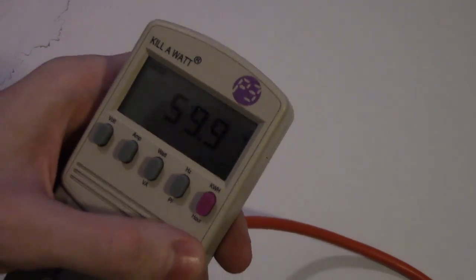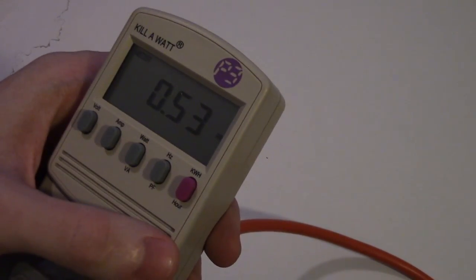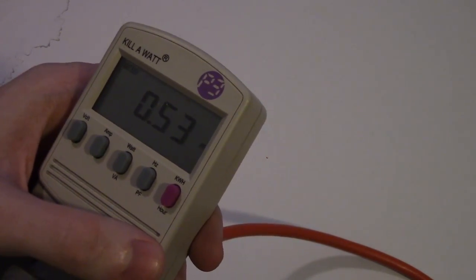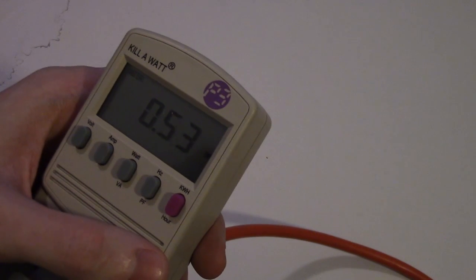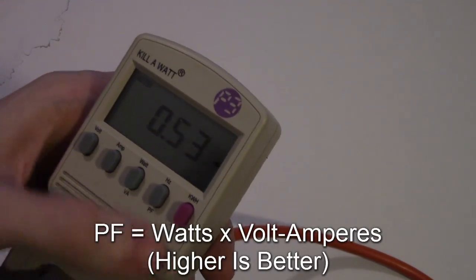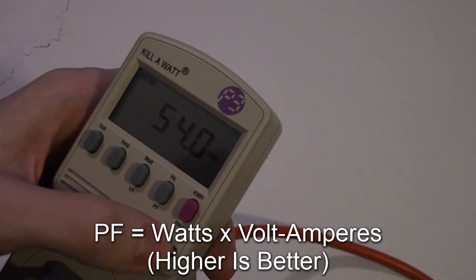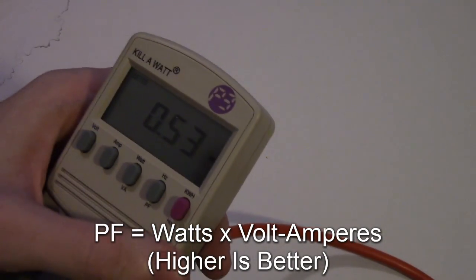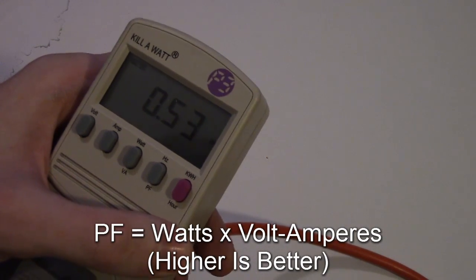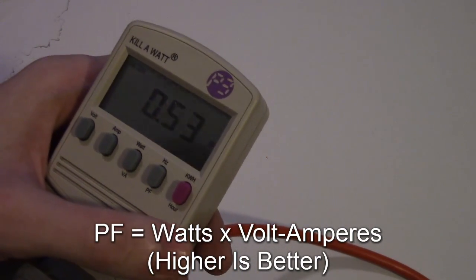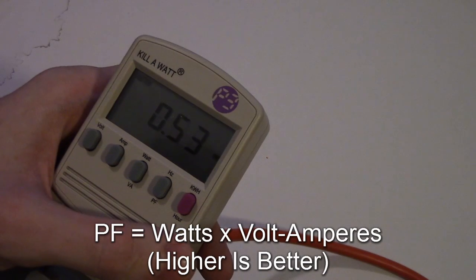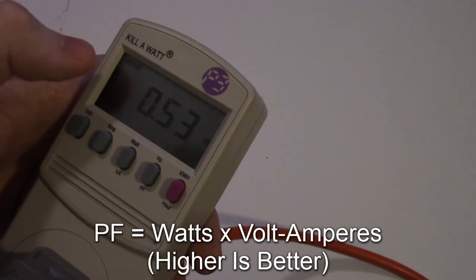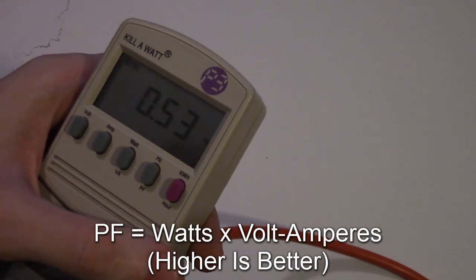Hertz isn't going to change. Now we're in the power factor, and it says 0.53. Power factor is another calculation. It's a ratio between the watts, 54 right here, and volt amperes of 100. Most of the time, it hovers around 50%, or 0.5. That's what you mostly see it around. It's a ratio between the real power, which is the watts, and the apparent power, which is volt amperes.